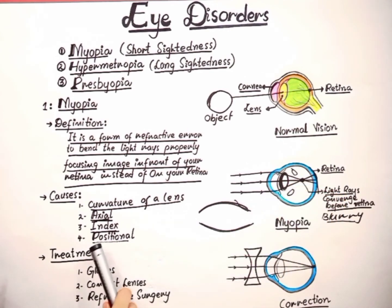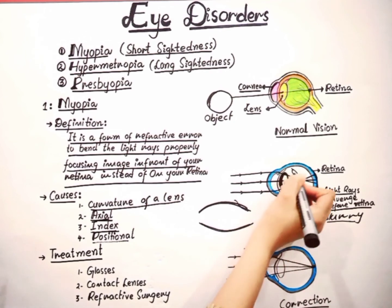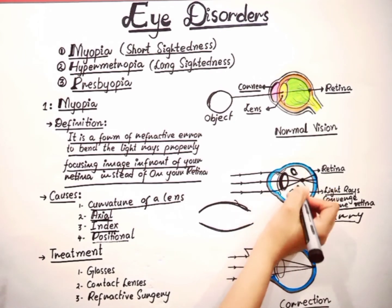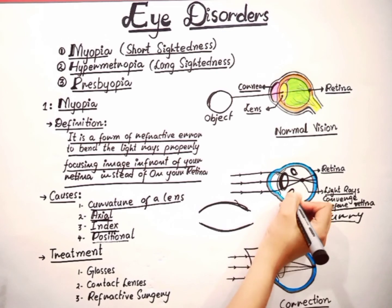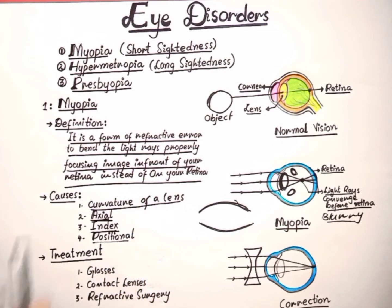The last cause is positional — meaning anterior displacement, where the lens is displaced from its original position, possibly due to injury or trauma. So these are some of the causes of the myopia condition.